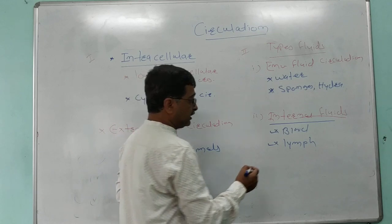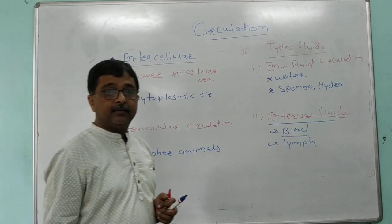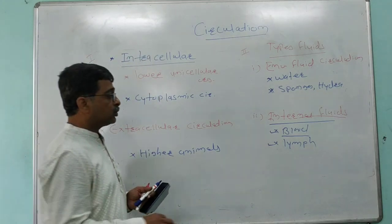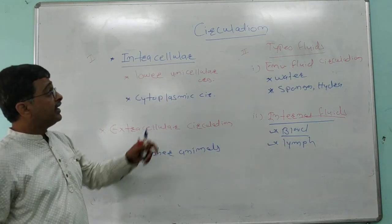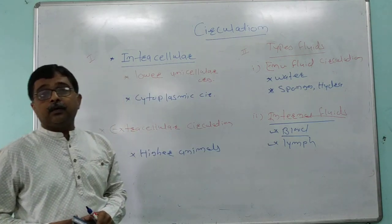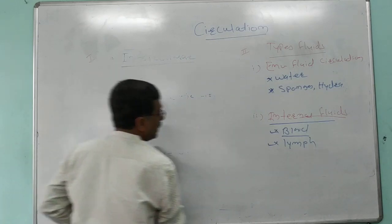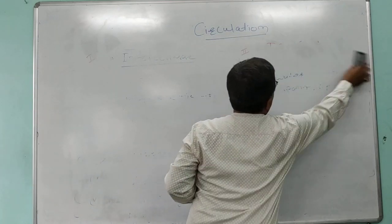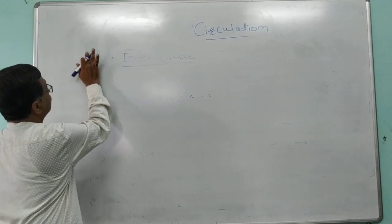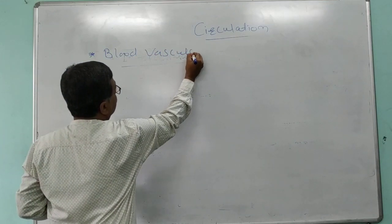The process of circulation where blood is acting as a circulating fluid is called the blood vascular system. In human beings, there is a presence of a blood vascular system, and under this chapter on circulation, we are going to discuss in detail about the blood vascular system in man.